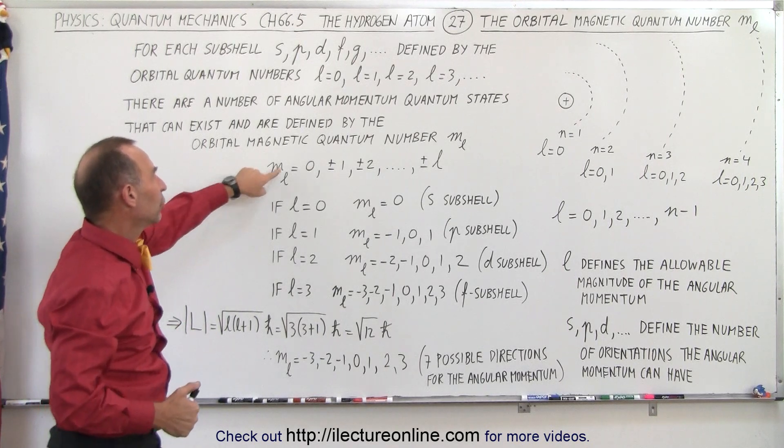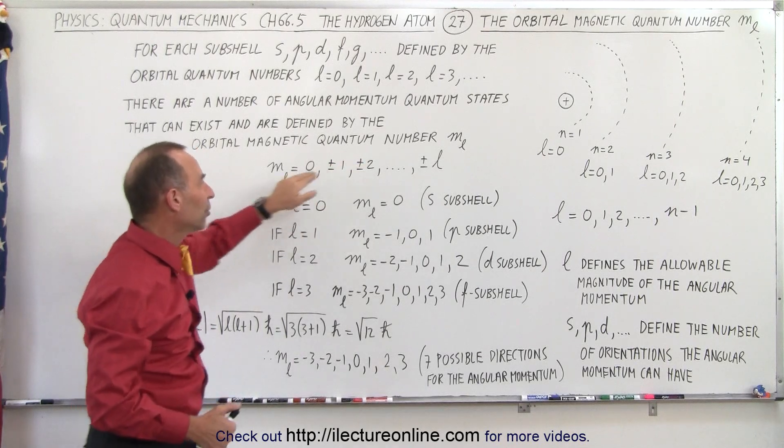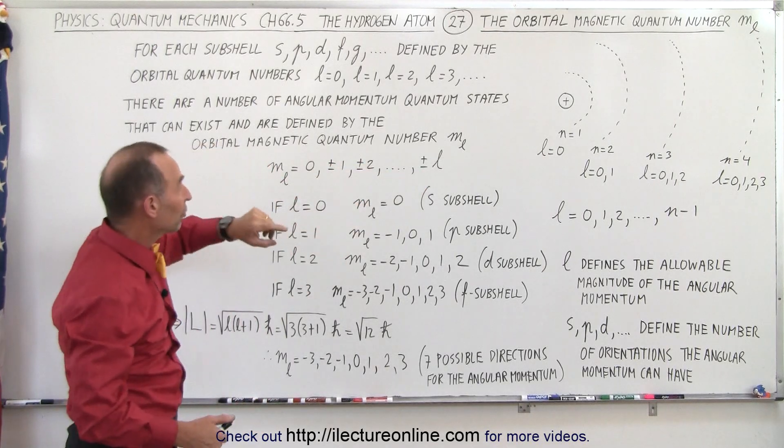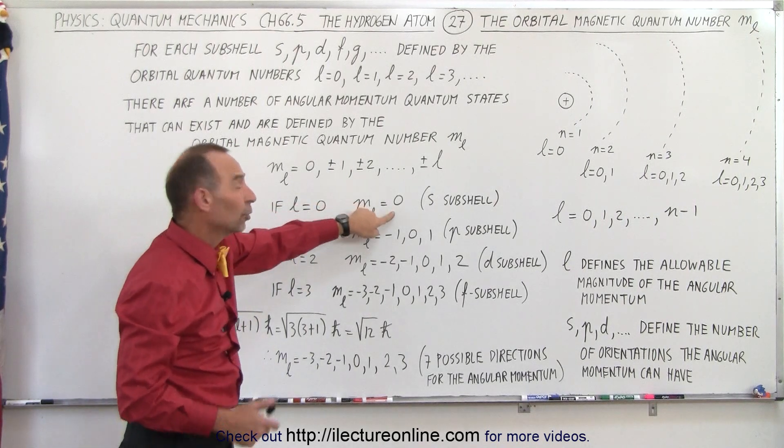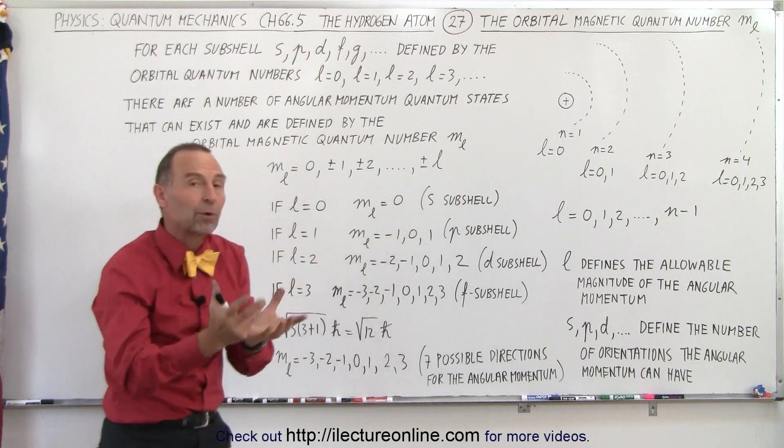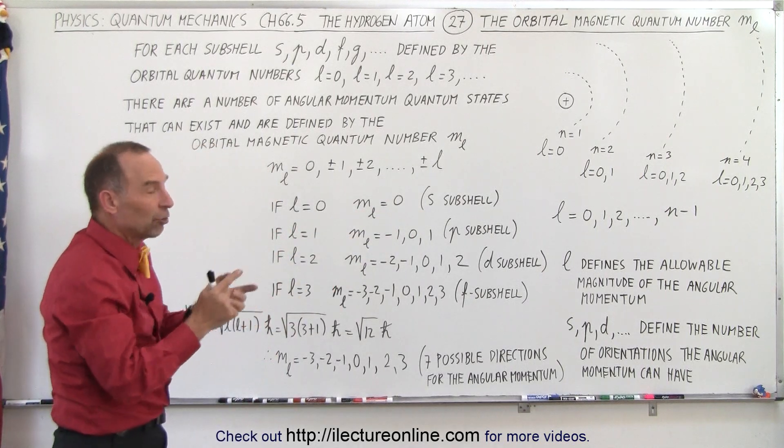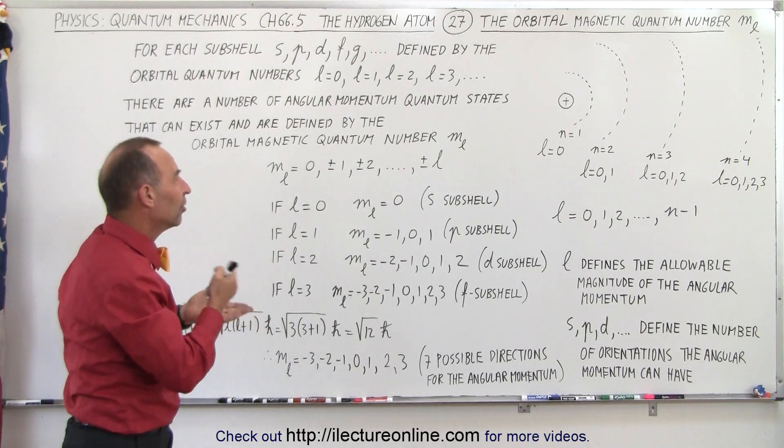So M sub L being equal to 0, plus 1, minus 1, plus 2, minus 2, and so forth, all the way up to the value of L. Notice that if L, for example, is equal to 0, M sub L can only have one value, which is 0. That creates what we call the S subshell, and therefore there's only one direction the angular momentum can have relative to the z-axis.